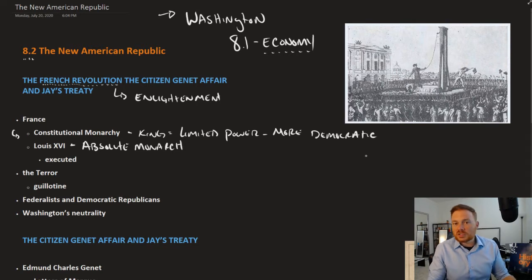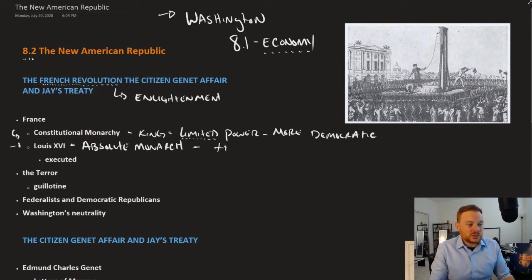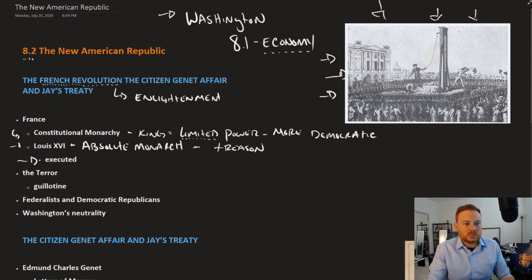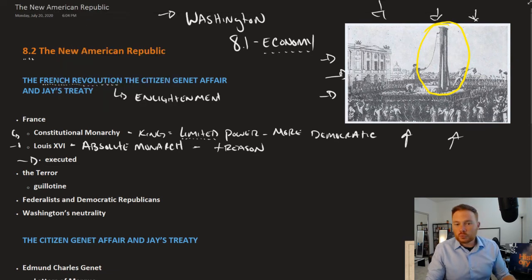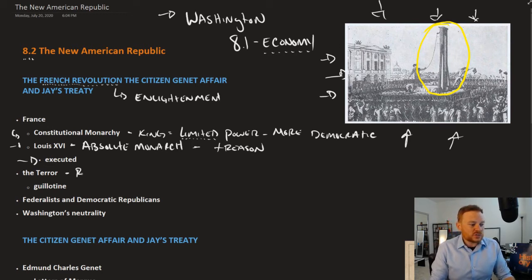At first, this went pretty smoothly. However, Louis XVI didn't like the fact that his power was going to be limited, so he attempted to escape. He was caught, charged with treason, and was executed by the French people. This image shows the king being executed by one of the newer executing technologies of the day — the guillotine — which would behead somebody quickly and efficiently. Once Louis XVI was beheaded, it sent France into a much more radical period known as the Terror.